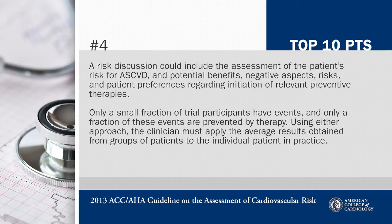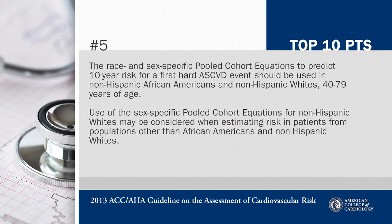Point five is that the race and sex-specific pooled cohort equations to predict 10-year risk of first hard cardiovascular event should be used in non-Hispanic African Americans and non-Hispanic whites, ages 40 to 79. Use of sex-specific pooled cohort equations for non-Hispanic whites may be considered when estimating risks in patient populations other than these two groups.